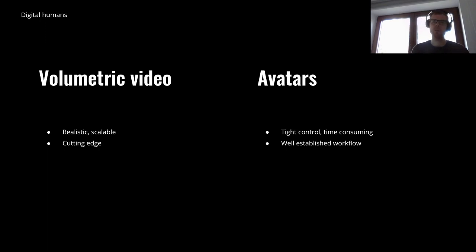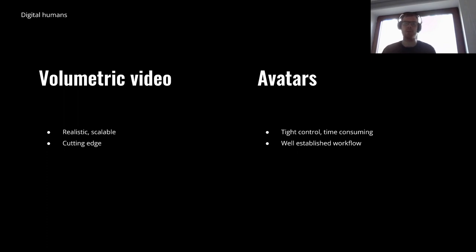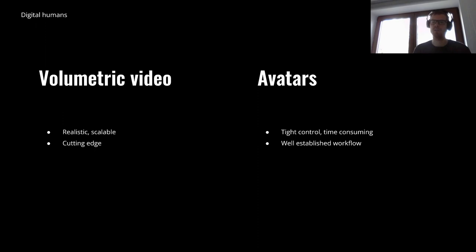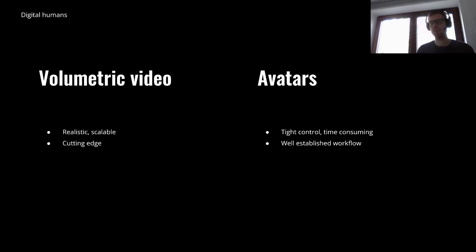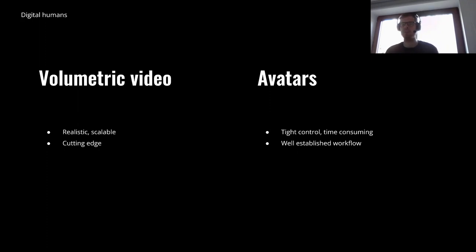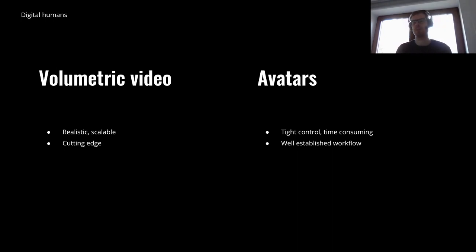In terms of volumetric video pipeline, we are pretty much designing new workflows, as each project has a unique set of requirements. While the avatar pipeline is tailored to project needs as well, there are many common steps — solutions for certain problems are usually standard in the visual effects industry. However, there is still a lot of innovation in this pipeline, especially for difficult or time-consuming steps. For example, some recent work includes Epic Games Metahumans or Ziva Dynamics Phase Trainer.